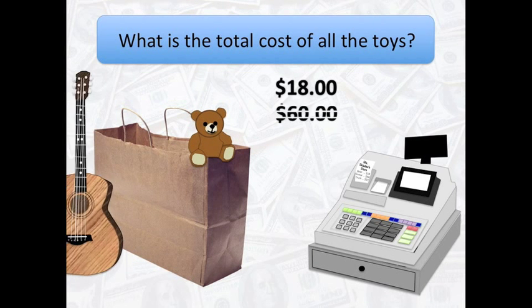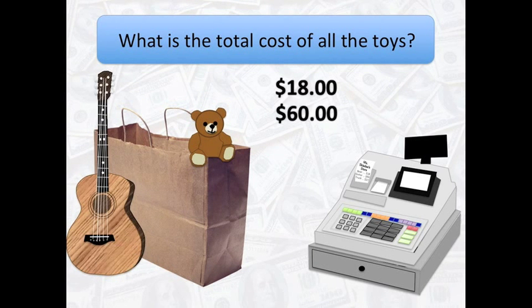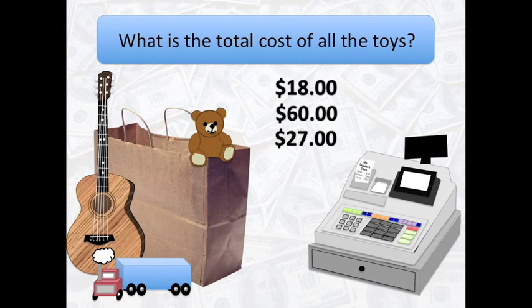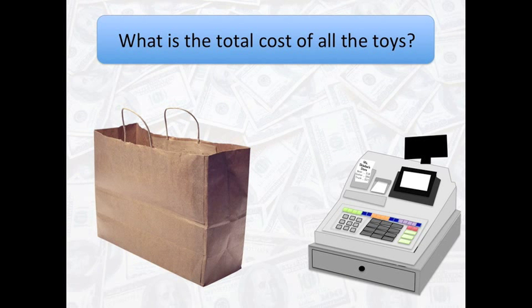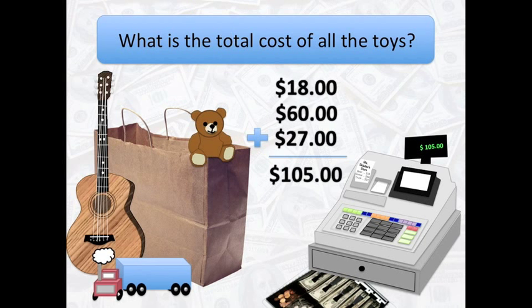Now, in order to conclude our shopping trip at the class store, we need to find the total cost of all the toys by adding all of the discounted items we want to purchase. The sale price of the teddy bear is $18, plus the sale price of the guitar is $60, plus the sale price of the toy truck is $27, which equals $105. So, the total cost of all the items is $105.